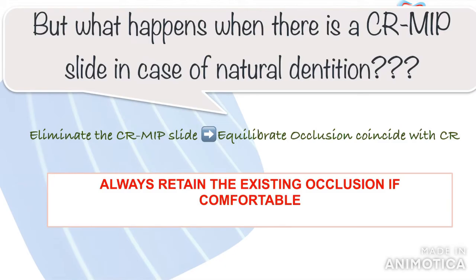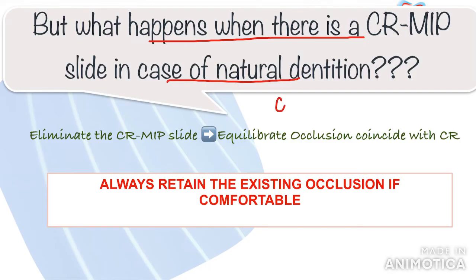Moving on, many of you are aware of the centric relation to maximum intercuspal position slide, or CR-MIP slide. So what happens when there is a CR-MIP slide? You need to know that 90% of the time you will find a slide from your centric relation position to maximum intercuspal position. There is always approximately a 0.5 to 2 mm slide.